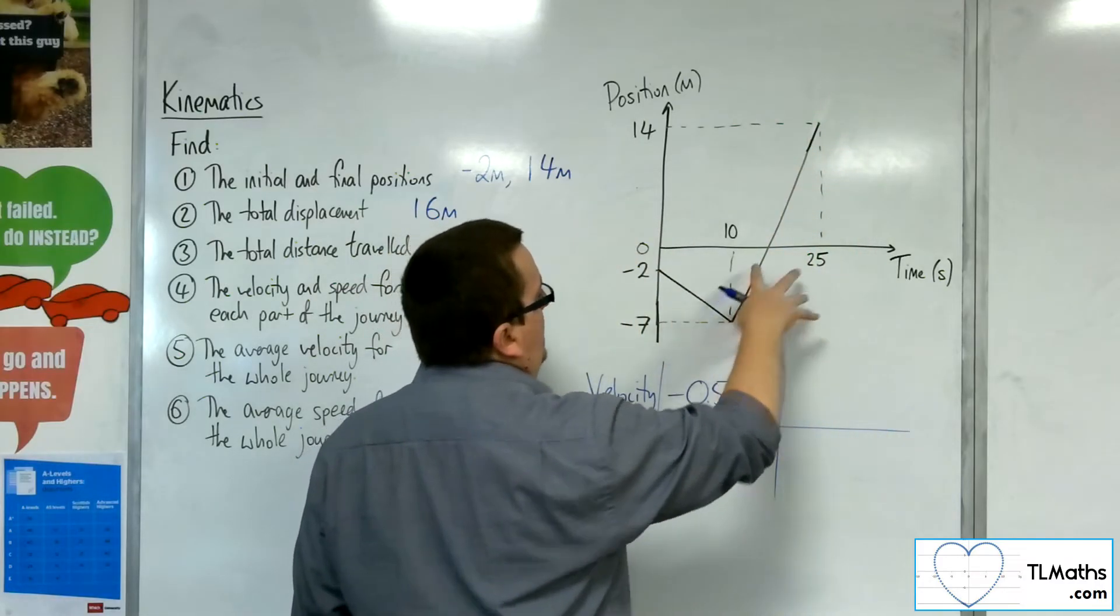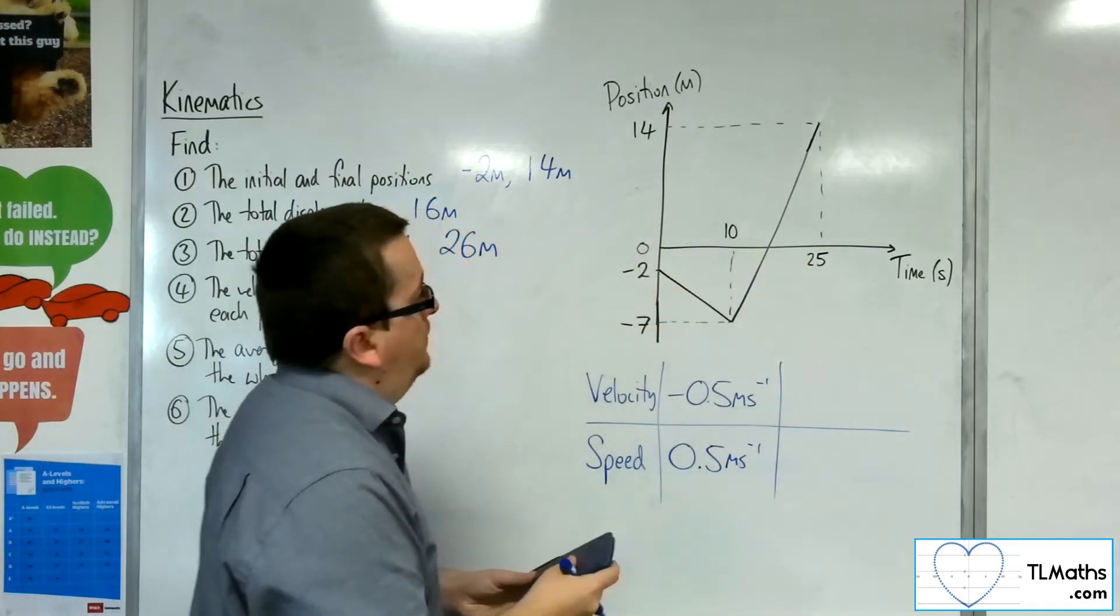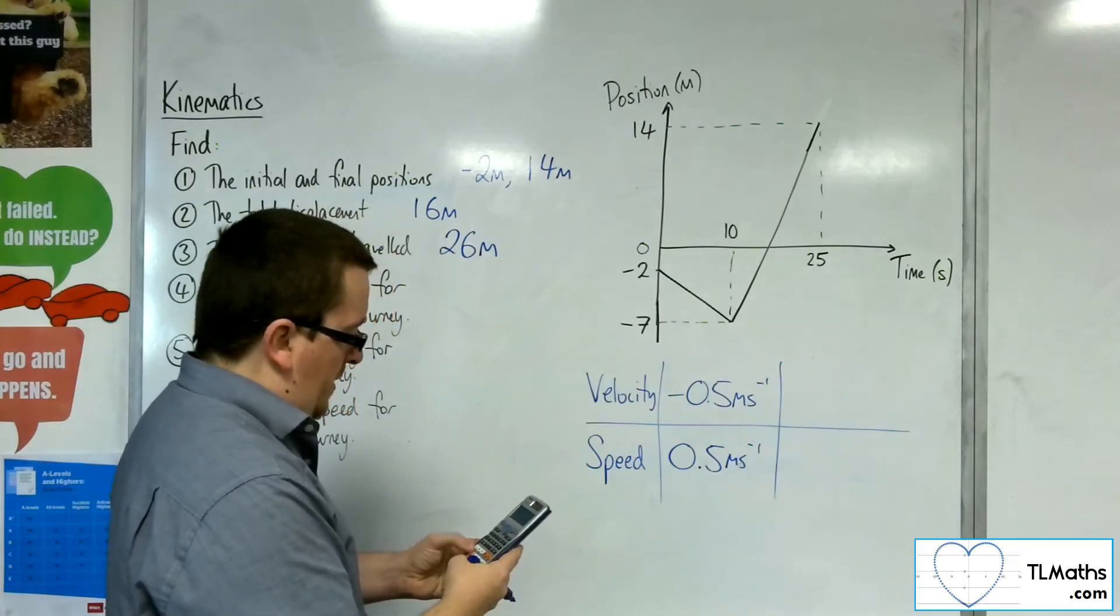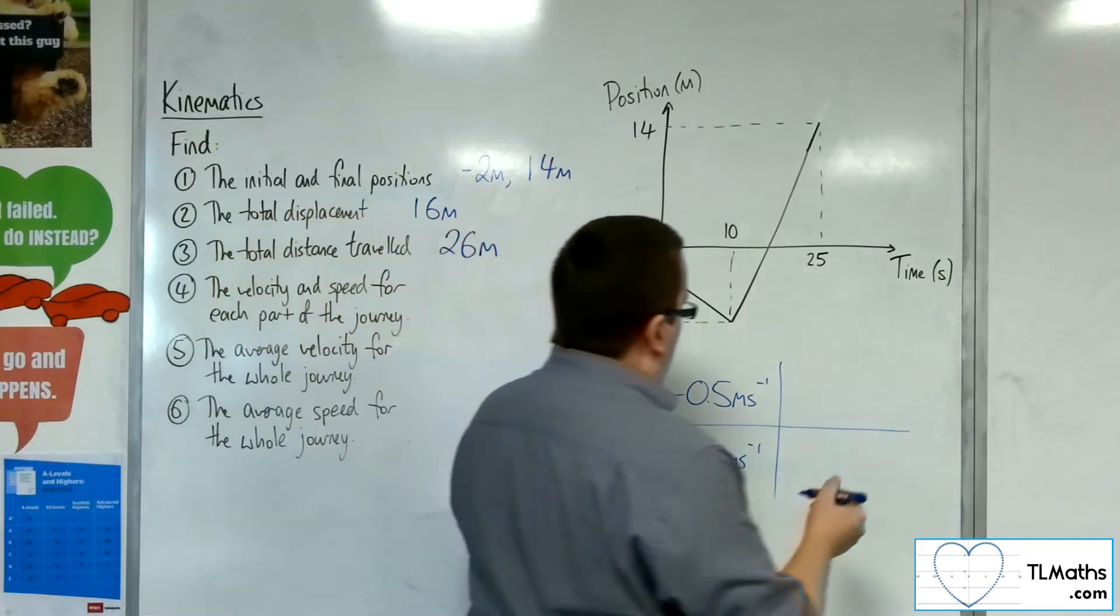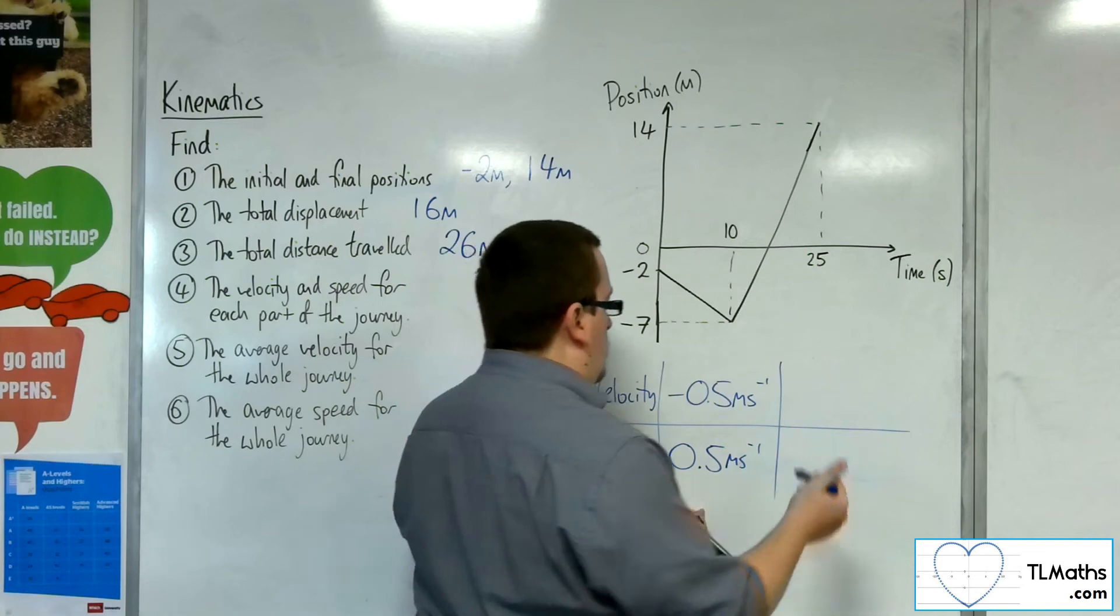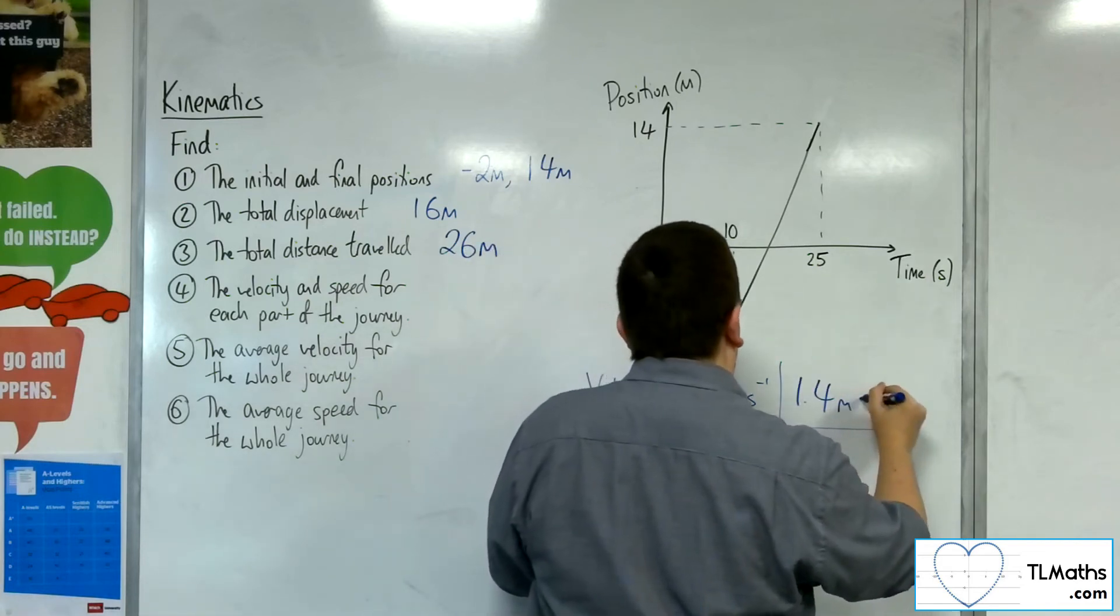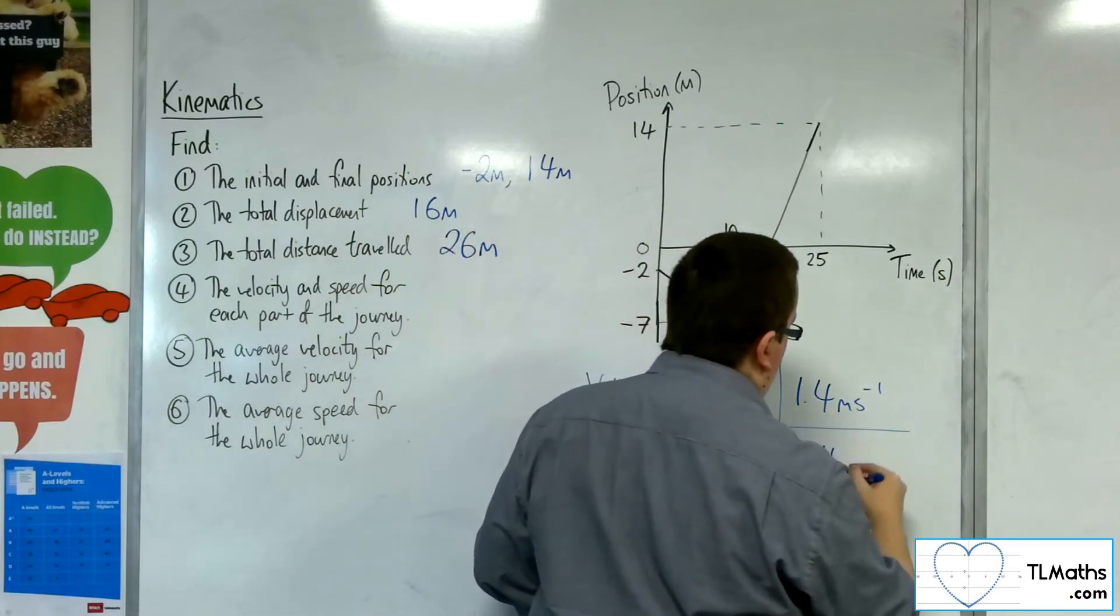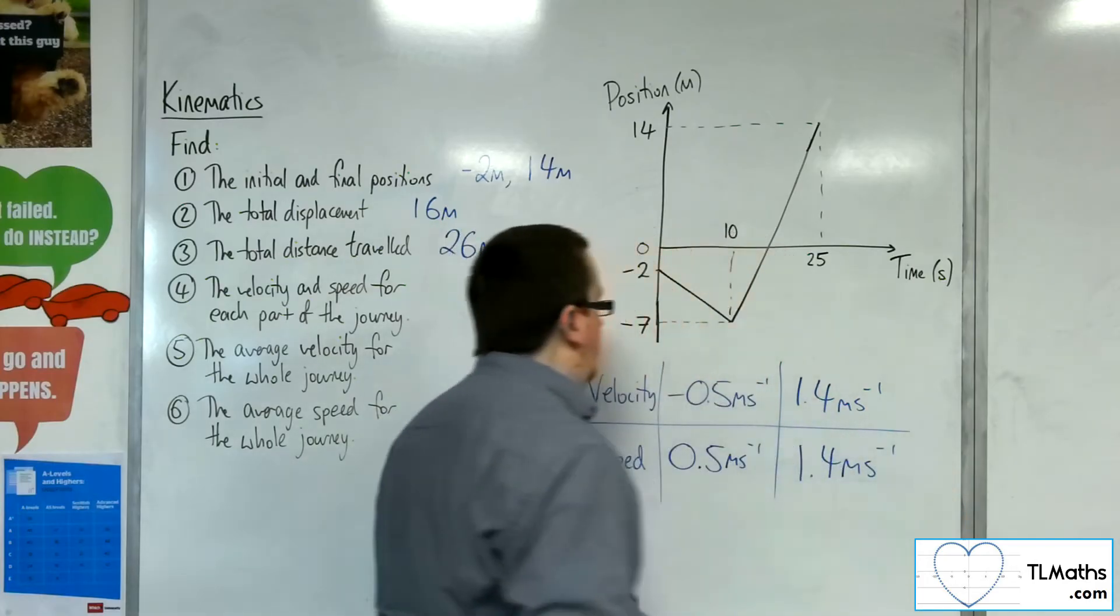in 15 seconds. So 21 divided by 15 gets down to 7 fifths, which is 1.4 metres per second in the positive direction. And so the speed is also 1.4 metres per second.